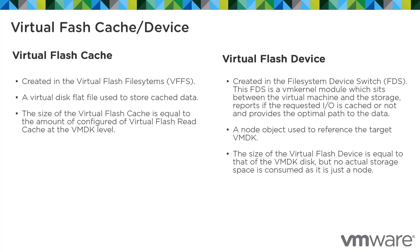A virtual flash device is created in the file system device switch. This FDS is a VM kernel module which sits between the virtual machine and the storage, reports if its requested IO is cached or not, and provides the optimal path to the data. It is a node object used to reference the target VMDK, and its size is equal to that of the VMDK disk, but no actual storage space is consumed as it is just a node.